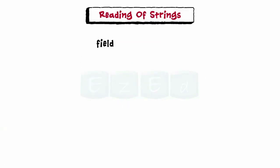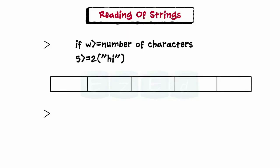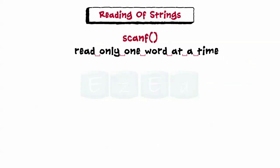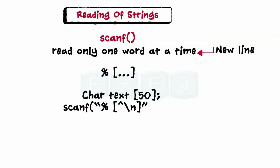We can also specify the field width in the scanf statement. If the width w is greater than or equal to the number of characters typed in, then the entire string will be stored in the variable. However, if w is less than the number of characters typed in, the remaining characters are truncated. Since scanf reads a string without white spaces — only one word at a time — using a specific format specification allows scanning a string having multiple words, making the compiler read until a new line character is entered.